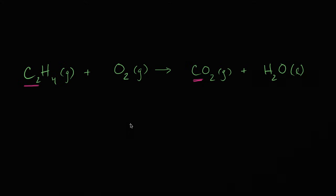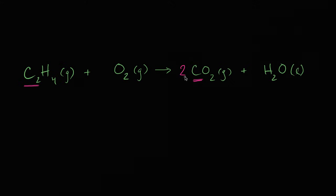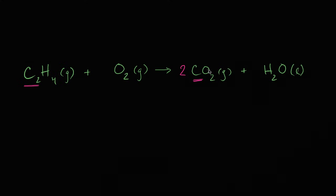So it seems like the best way to balance it is, I should have two molecules of carbon dioxide. And I haven't even thought about the oxygens yet. By putting that two there, that's going to change the number of oxygens I have on the right-hand side. But at least it balances my carbons.